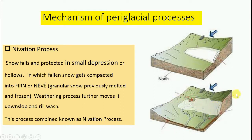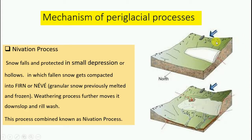In the third step, weathering processes occur over the nivation hollows, such as soil creeping or congelifraction. Because of this, the result is downsloping or mass movement of huge ice patches, and also meltwater wash due to water. This combination of these three steps is known as the nivation process.